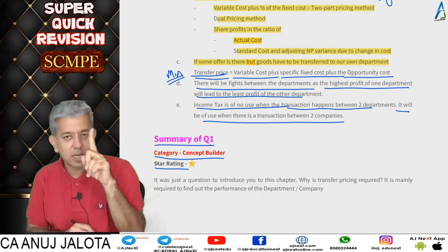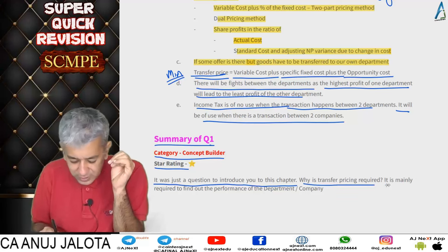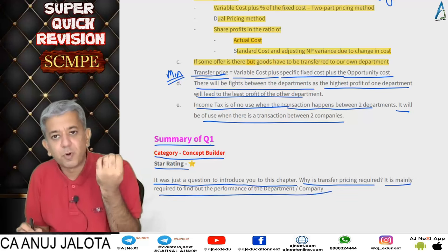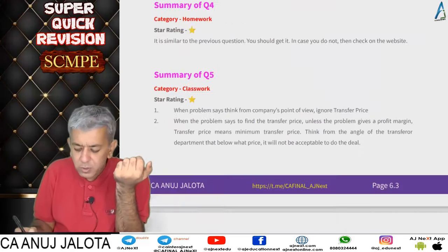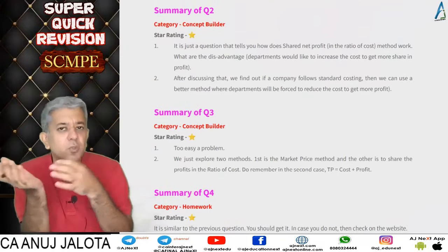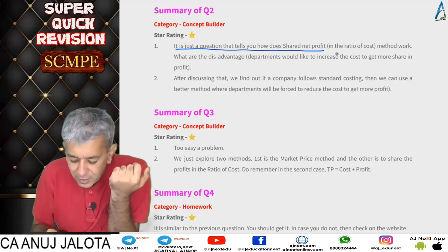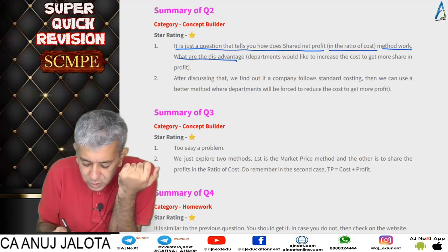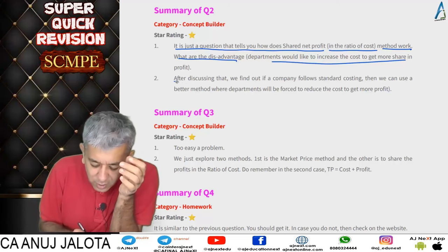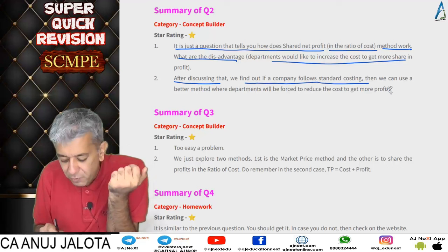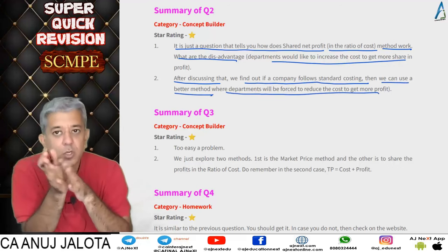Question one was a one-star question, just a concept builder to introduce why transfer pricing is required — mainly to judge the performance of a particular department or company. For example, when Jio acquired Saavn, we needed to judge how Saavn was performing. Question two showed how the standard net profit in the ratio of cost method works. The disadvantage: departments would like to increase cost to get more share of profit. So we introduced a better method where departments are forced to reduce cost to get more share of profit.